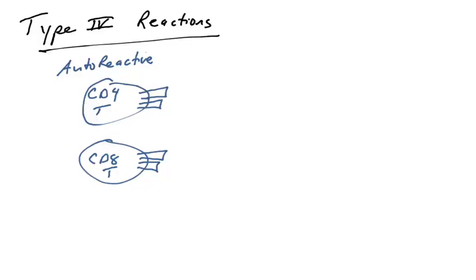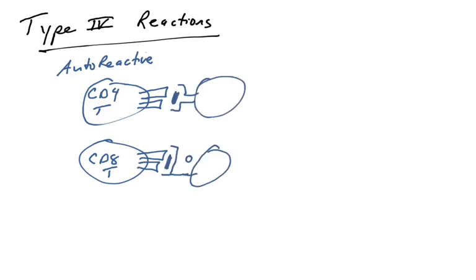Let's talk about type 4 hypersensitivity reactions in terms of autoimmune responses. In type 4 reactions, it is primarily T-cells that are initiating and having the effector function that is damaging organs and tissues. We talk about these autoreactive T-cells — they could be CD4 or CD8 — recognizing self-peptides. You're going to need T-cells in type 2 and type 3 reactions to generate antibodies, but in type 4 reactions we're referring to T-cells and their ability to induce inflammation on their own and kill cells on their own, via T-cell receptors recognizing self-peptides presented on MHC1 or MHC2 molecules.